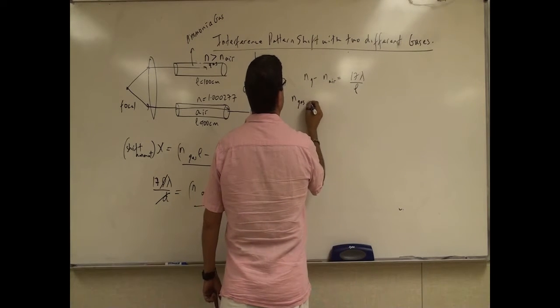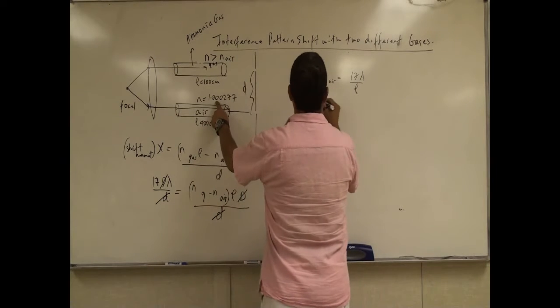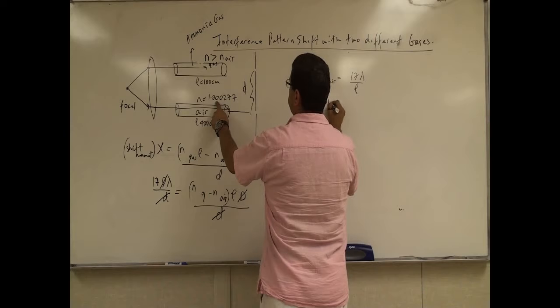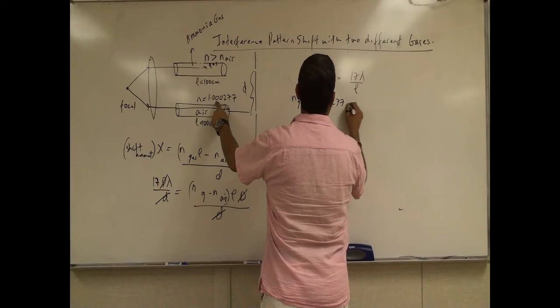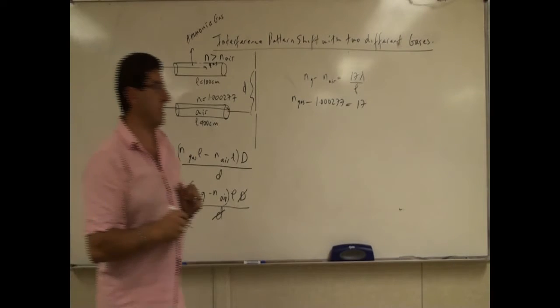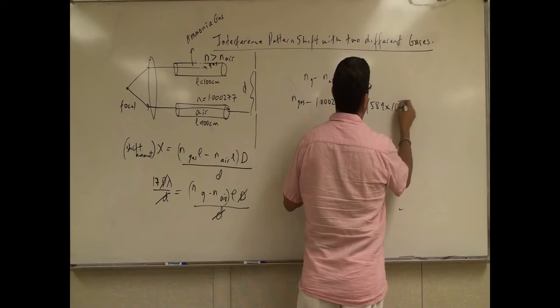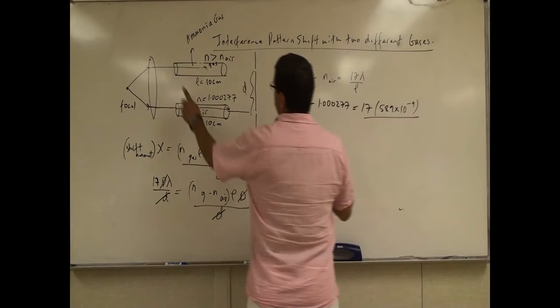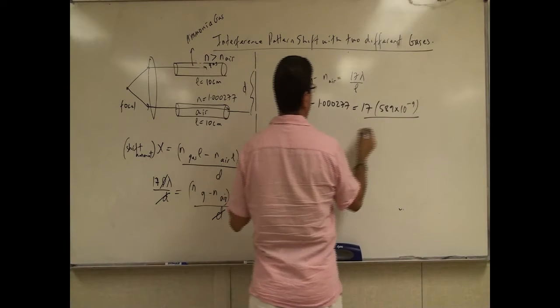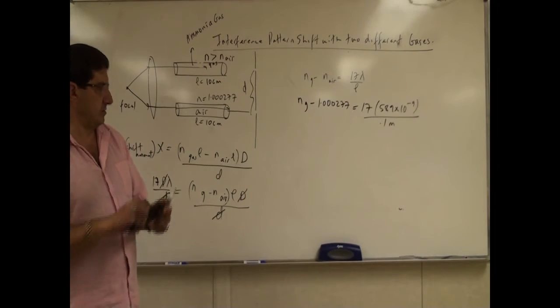N gas minus N air. So then I can put down what the index of refraction of air is 1.000277, 17, and then they're giving us that the wavelength is 589 nanometer. So 589 times 10 to the minus 9. And then the length of the tubes is the same. So it's equal to 0.1 meter. So 10 centimeter is 0.1 meter. So let's calculate that now.